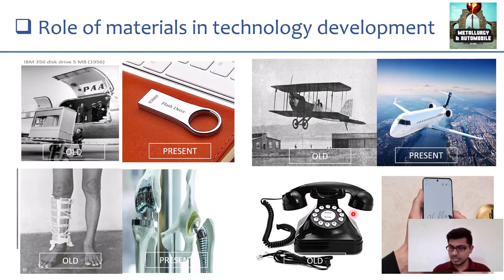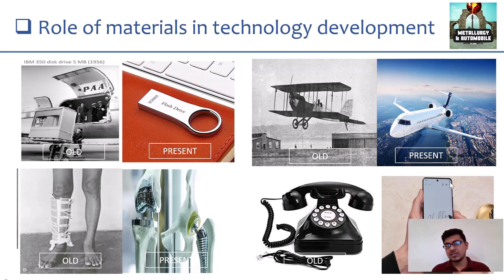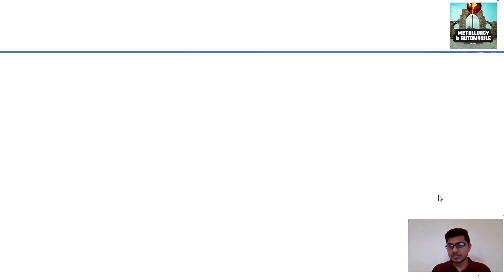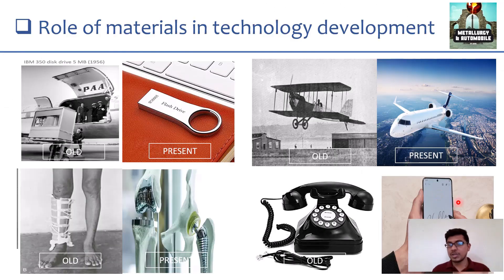And, in telecommunication industry also, earlier the phone, we can see these are the telephones. Now, nobody have any telephones. Everybody using the smart mobiles. All these are possible because there is a development in materials, ultimately development in technology. Based on this, I hope you can understand the role of materials in technology development.